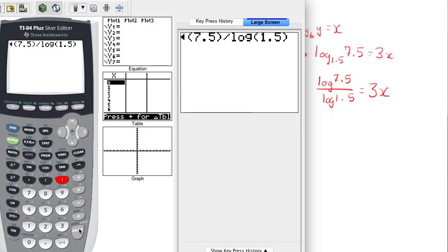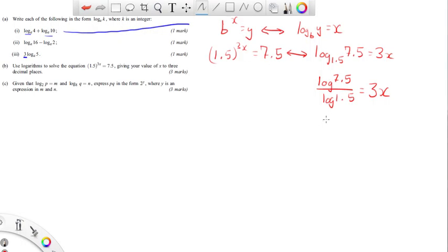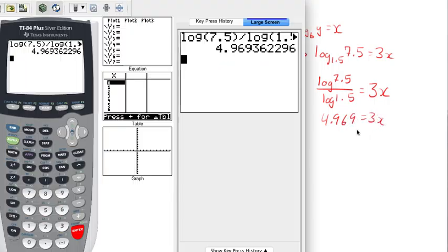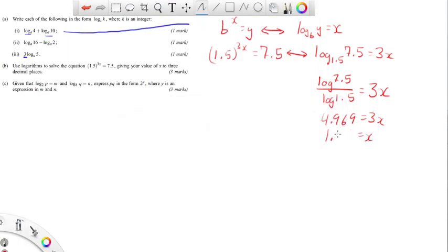So in your calculators, I'm using my TI-84 today, so we just do log of 7.5, close my brackets, divide it by log of 1.5. That's going to be—and I think they want 3 decimal points—so we can say 4.969. So 4.969 is equal to 3X. So if we take that 4.969 divided by 3, we're going to get 1.656.